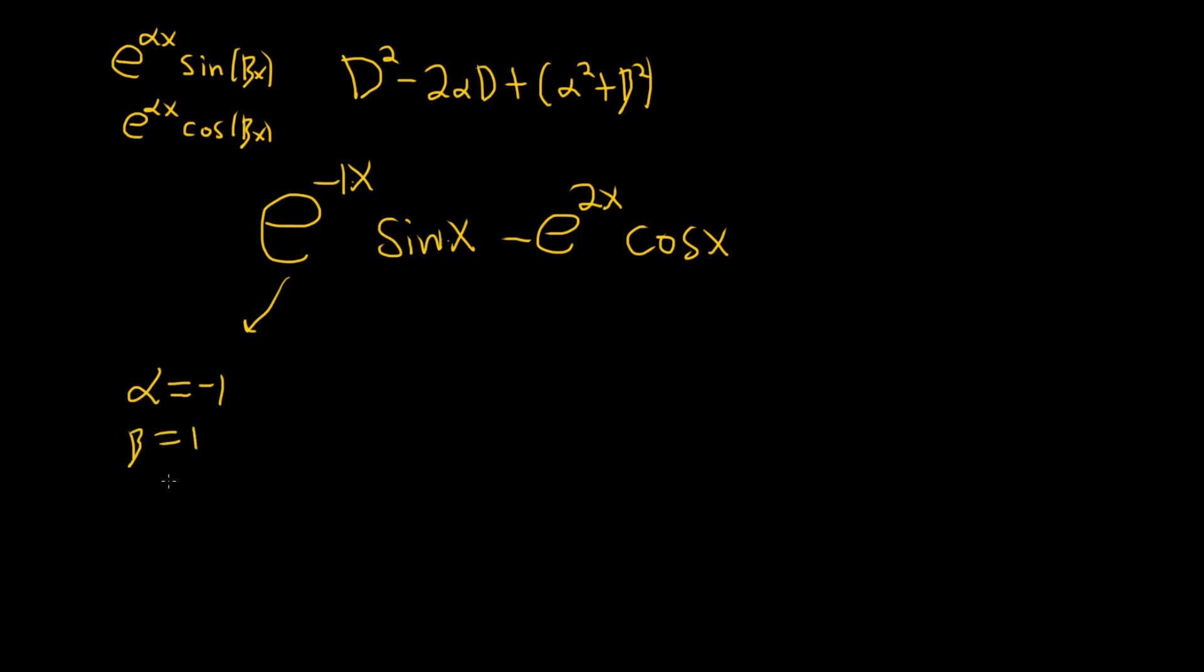So the annihilator for the first term would be d squared. It's minus 2 times alpha, so it'll be a plus 2d. And then when you square negative 1, you get 1. You square 1, you get 1. So you would get negative 1 squared plus 1 squared. So just 2.